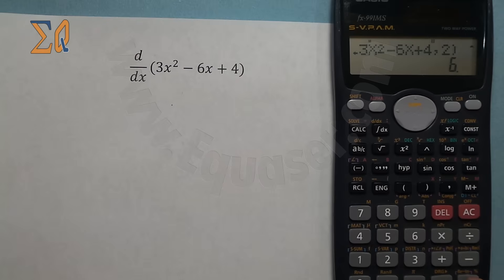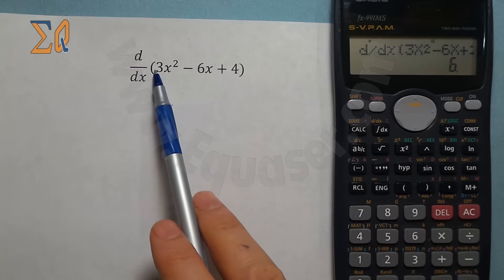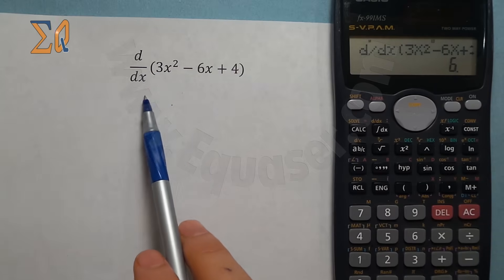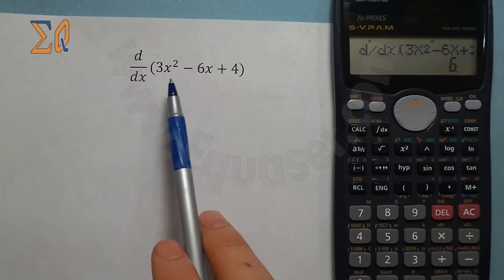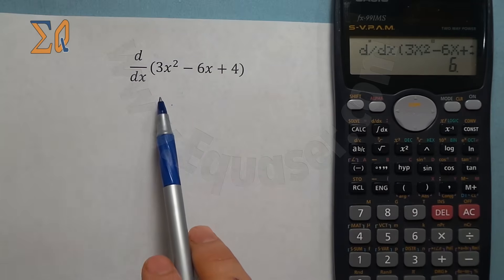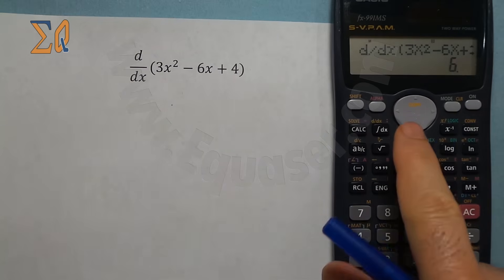As you can see, it's 6. It makes sense - if you take the derivative, it will be 2 times 3, which is 6x, minus 6. So 6x - 6. If I plug in 2, 6 times 2 is 12 minus 6 is 6, so it makes sense.